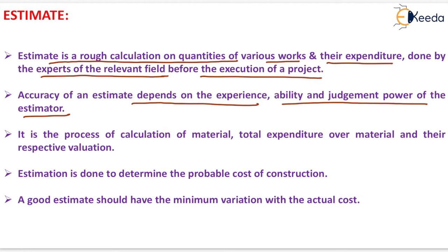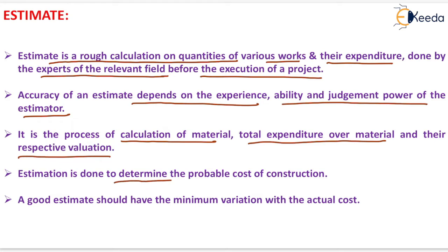Estimation is the process of calculation of material, total expenditure over material, and their respective valuation. It is generally done for the calculation of quantity of material, total expenditure, and their valuation. Estimation is done to determine the probable cost of construction, and a good estimate should have the minimum variation with the actual cost.